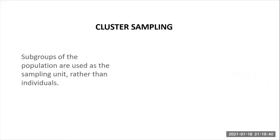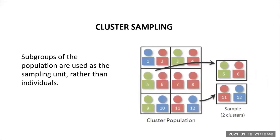For cluster sampling, subgroups of the population are used as the sampling unit rather than individuals. The population is divided into subgroups known as clusters, which are randomly selected to be included in the study. Clusters are usually already defined — for example, all members of each household could be identified as a cluster, or all students in a STEM section can be identified as a cluster as well.